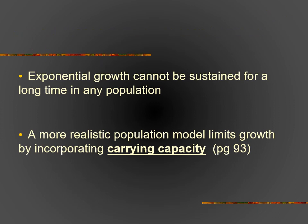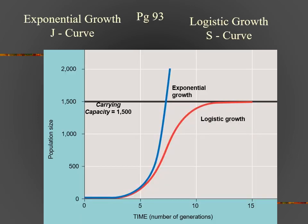Exponential growth is somewhat of a narrow view on how populations grow because it cannot be sustained for a long period of time — it's not sustainable indefinitely. A more realistic population model always ends up limiting growth by incorporating a concept called carrying capacity. Carrying capacity when integrated with exponential growth produces a logistical growth curve, which looks more like this — we call this an S-curve.